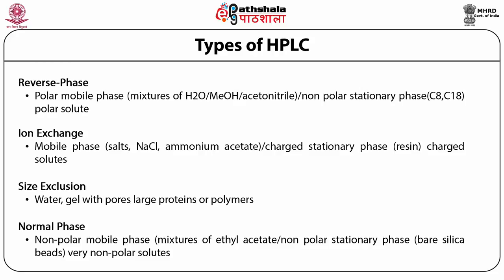When HPLC was first developed, people preferred to use normal phase — that means a polar stationary phase and non-polar mobile phase. Silica was the first compound used in HPLC columns for separation, in which organic solvents like ethyl acetate, benzene, chloroform, and tetrahydrofuran — non-polar solvents — are used for separation. That is why it is called normal phase: the silica is hydrophilic upon which a hydrophobic solvent was used.